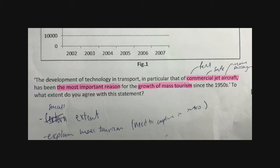Question 2 is an 8-mark open-ended question with the statement: 'Development of technology in transport, particularly that of commercial jet airplanes, has been the most important reason for the growth of mass tourism since the 1950s. To what extent do you agree with this statement?' A gentle reminder: you need to talk about the given factor — in this case, rise in technology, specifically commercial jet airplanes — and then the growth of mass tourism.